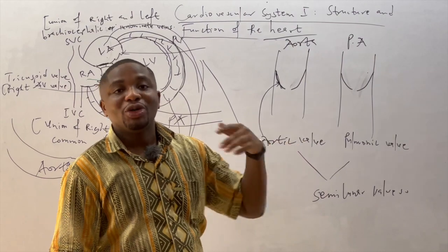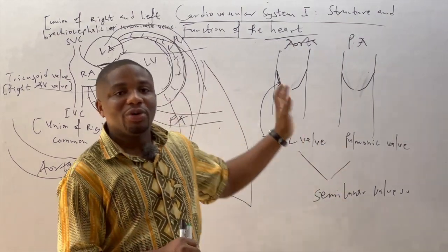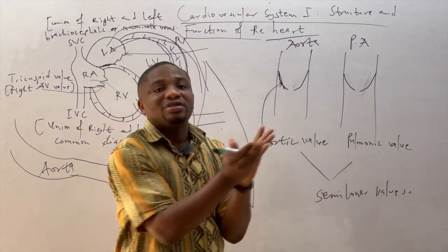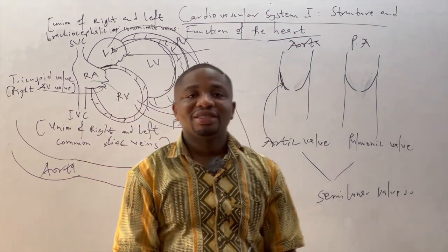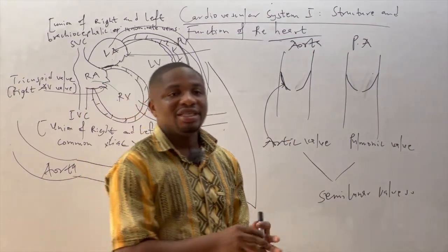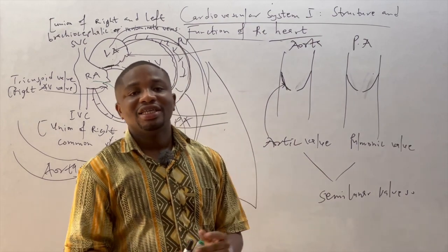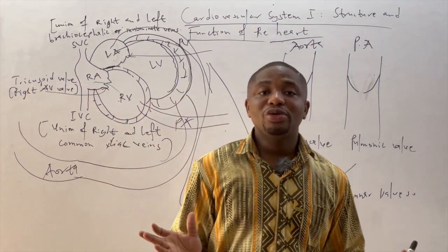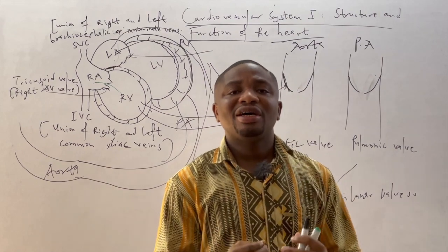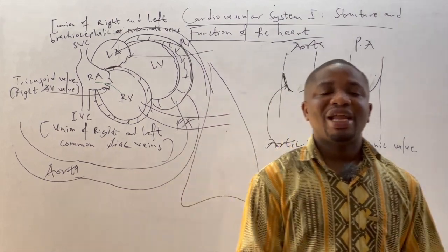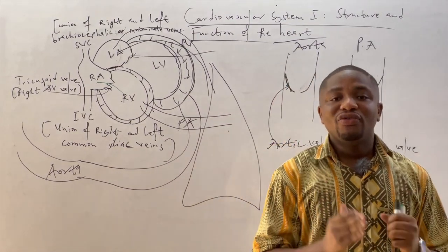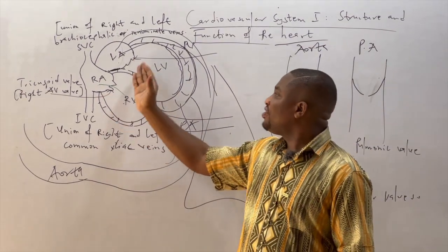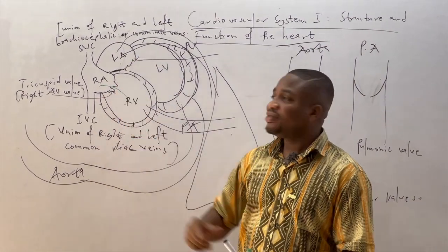The aorta and the pulmonary artery also have valves: the aortic valve and the pulmonic valve. Their shape looks like a half moon, and because of that, collectively these two valves are referred to as the semilunar valves. Valves allow for unidirectional flow of blood, ensuring that blood only flows in one direction.